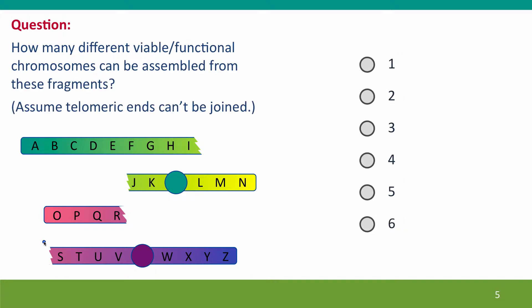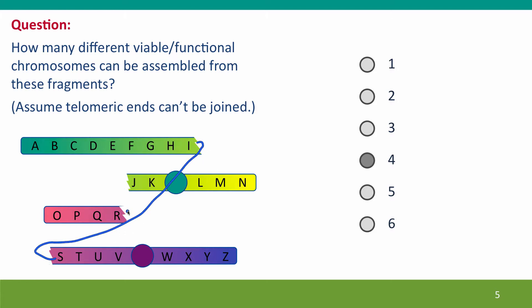Second question: take the same chromosomes. How many different functional chromosomes can be assembled from these fragments? Assume that telomere ends are not broken ends and they won't be joined together by the end-joining machinery. The answer is there are four different chromosomes that can be formed. Two can be formed by putting the original molecules back together, and two can be formed by putting them together in the wrong combinations — joining this one to that one, and this one to that one. Those would all be functional chromosomes, each with two telomeres and one centromere.